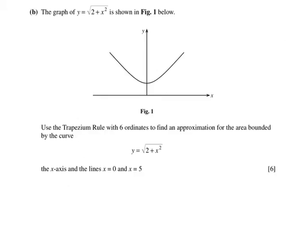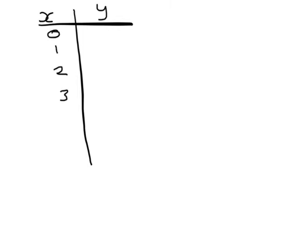B is a trapezium rule question. You should always remember that the trapezium rule is given in the formula booklet. The best way to present your answer to the examiner is to start with a table. We have our x values from 1 to 5.